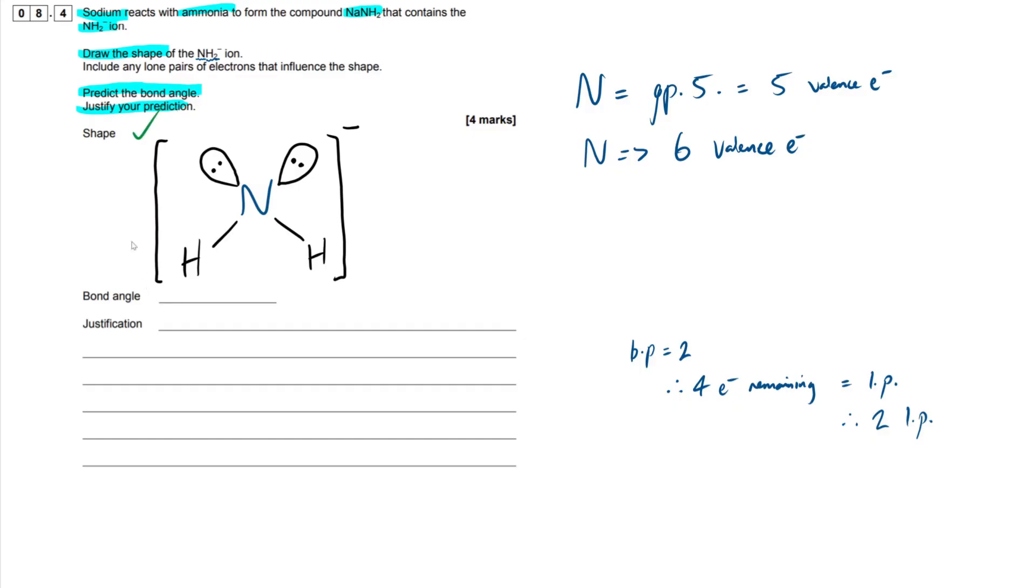Next up is our bond angle. Now, what you need to know within this topic is that every additional lone pair is going to restrict and decrease the bonding angle by roughly 2.5 degrees. So what we can do is we can think to ourselves, what is the shape if this was 3 bonding pairs and 1 lone pair, opposed to 2 bonding pairs and 2 lone pairs. So if we have 3 bonding pairs and 1 lone pair, this is going to equal a trigonal pyramidal, trigonal pyramidal shape.